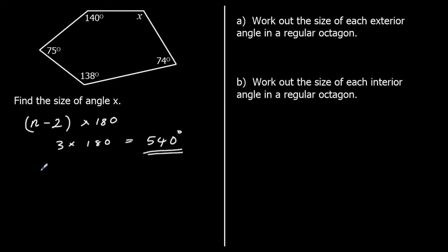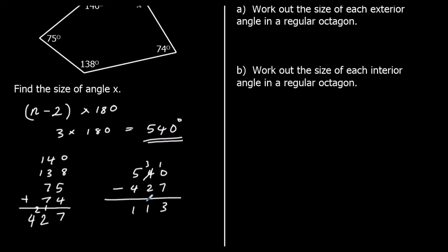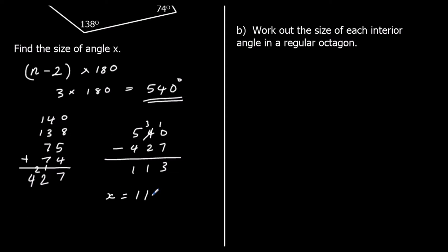Let's see what we've got so far: 140, 138, 75, and 74. Adding those up: 4 plus 5 plus 8 is 17; 7 plus 3 is 10, plus 7 is 17, plus 4 is 21, plus 1 is 22; and 1 plus 1 plus 2 is 4. So we've got 427 degrees. We need 540, so we need 113 more. So X is 113 degrees.